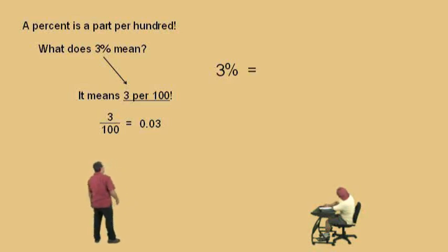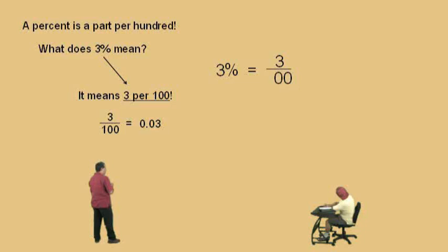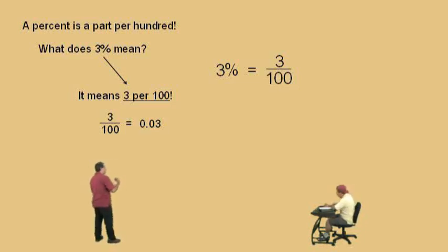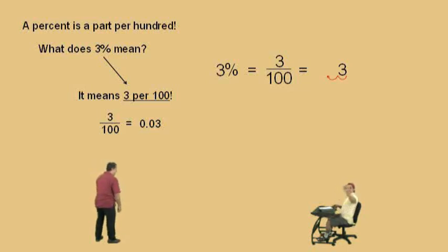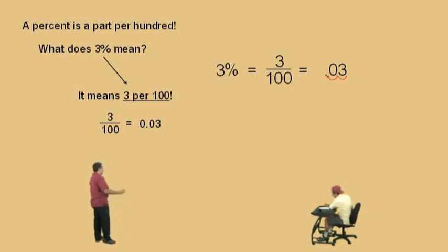Here we go, Charlie! Notice we have 3%, so we put 3 on top, over 100. There we go, so hopefully you'll remember that. Now, to write it as a decimal — notice it's 3 over 100, which means 3 divided by 100. So Charlie, which way does a decimal move when you divide by 100? Left 2 times. That's right, 2 times. And so there it is: 0.03, that's 3 hundredths.